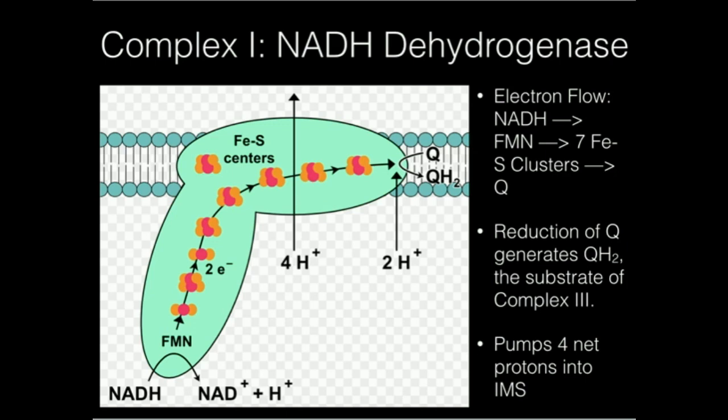The ubiquinol that is generated from these two enzyme complexes is going to be taken up by complex 3 and processed there, which we'll talk about in a separate video. But I want to go over these first two protein complexes in the mitochondria.